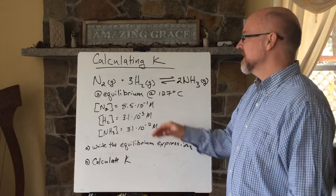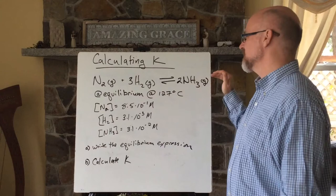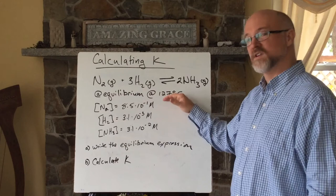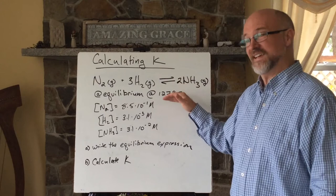And so we take nitrogen gas and hydrogen gas and react them to make ammonia. Here's the balanced chemical equation. And at equilibrium, at 127 degrees Celsius, because this process takes place at a higher energy state, we've got to put energy in.